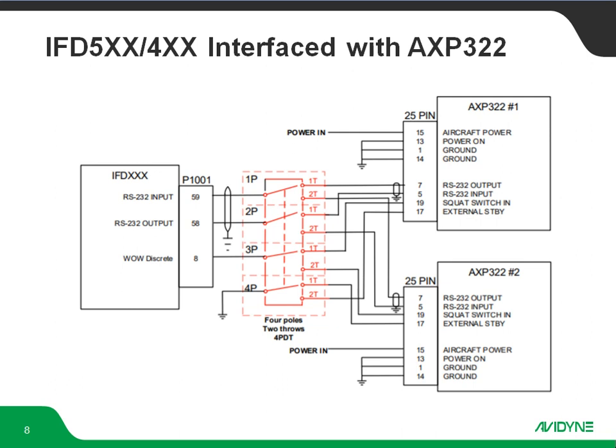This is only recommended if you're doing a single IFD to dual transponders. If you've got dual IFDs, it's highly recommended to wire them independently — AXP322 number one to IFD number one, AXP322 number two to IFD number two. You will still need to wire in a switch for that external standby, but it adds another level of redundancy if you can do independent wiring to each IFD.